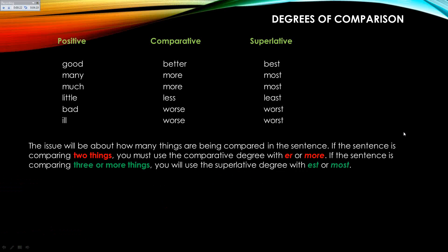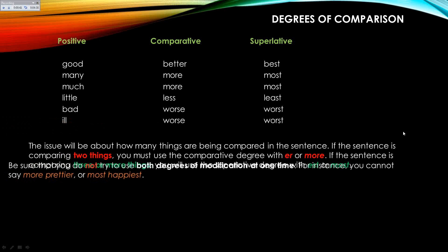The issue about how many things are being compared is going to be the important thing on the SAT. If the sentence is comparing two things, you have to use the comparative degree with either ER or more. If the sentence is comparing three or more things, you will use the superlative degree with EST or most.